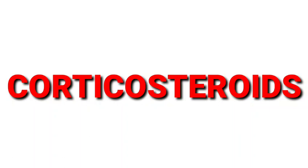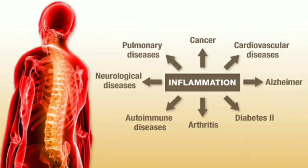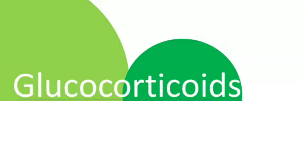Then corticosteroids — these are used in the treatment of inflammatory disorders. They help suppress the immune system and prevent rejection of transplanted organs such as the liver, kidney, and other organs. Examples include glucocorticoids such as dexamethasone.